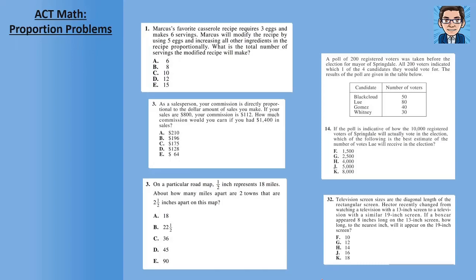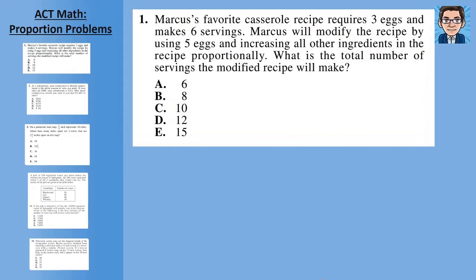Okay, let's take a look at these five sample problems having to do with proportions. All right, and the first problem, Marcus has a favorite castle recipe. Three eggs makes six servings. He's going to modify the recipe by using five eggs. How many servings will that get?